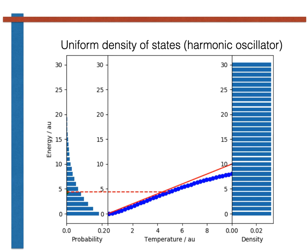If you have an infinite number of equally spaced microstates, as you do in a harmonic oscillator, you really would see a linear increase in the average energy at all temperatures.